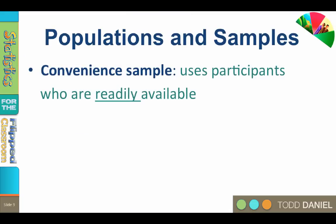Truly random sampling is difficult to do, especially when we are studying human beings. Sometimes we don't have the time, money, or availability to do truly random sampling. Even if we were studying college students at our university, a truly random sample would have to include all college students across the country. So many times we are left studying the people whom we have available — they become our participants because they are convenient, and we call this a convenience sample.